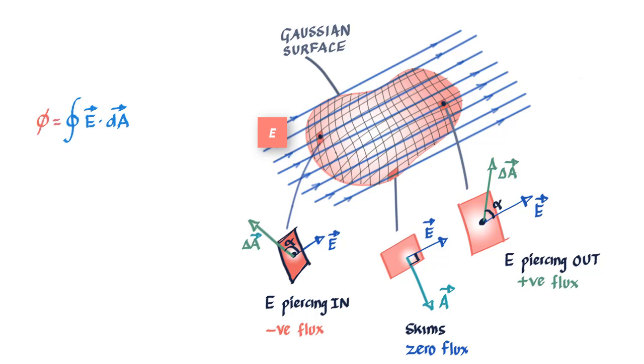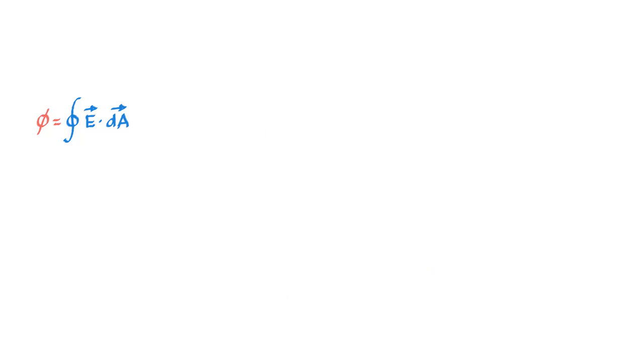Now the loop here should not worry you. All it means is that you should do integration over the entire surface, or more correctly entire closed surface, to get the net flux. And we call this a surface integral.